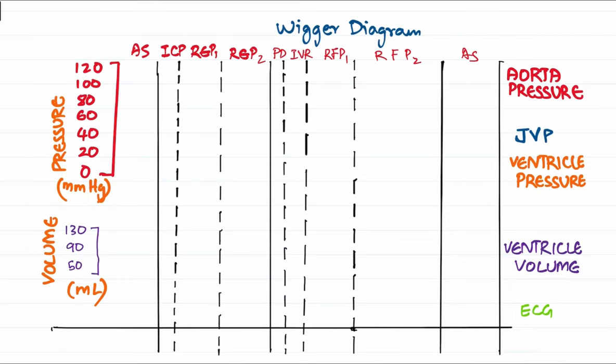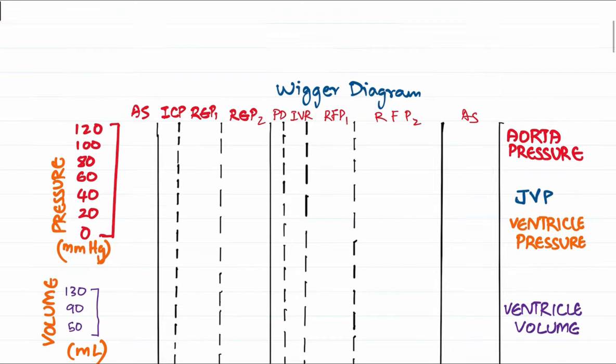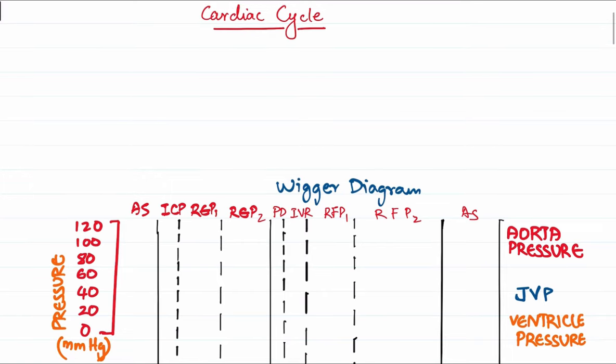This video will be about the cardiac cycle. We'll be explaining the cardiac cycle — both the mechanical and the electrical events — using the Wiggers diagram, which represents the ECG, ventricular volume, pressure changes, atrial changes in the form of JVP waves, and the aortic pressure.